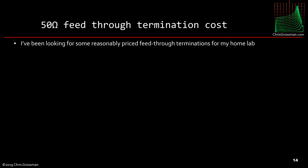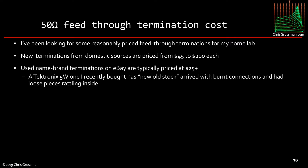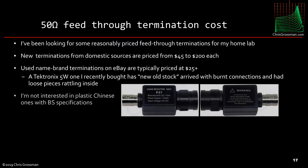I've been looking for a long time for reasonably priced terminations for my home lab. New terminations from domestic sources are priced at $45 to $200 each — that's a lot more than I'm willing to spend. Used name brand terminations on eBay are typically priced at $25 plus including shipping, which is kind of high. And a Tektronix unit I recently bought supposedly as new old stock arrived with burnt connections and loose pieces rattling inside. I got a refund, but I was not happy. I'm not interested in these plastic Chinese ones with bogus specifications you get inundated with when you search for them on eBay.